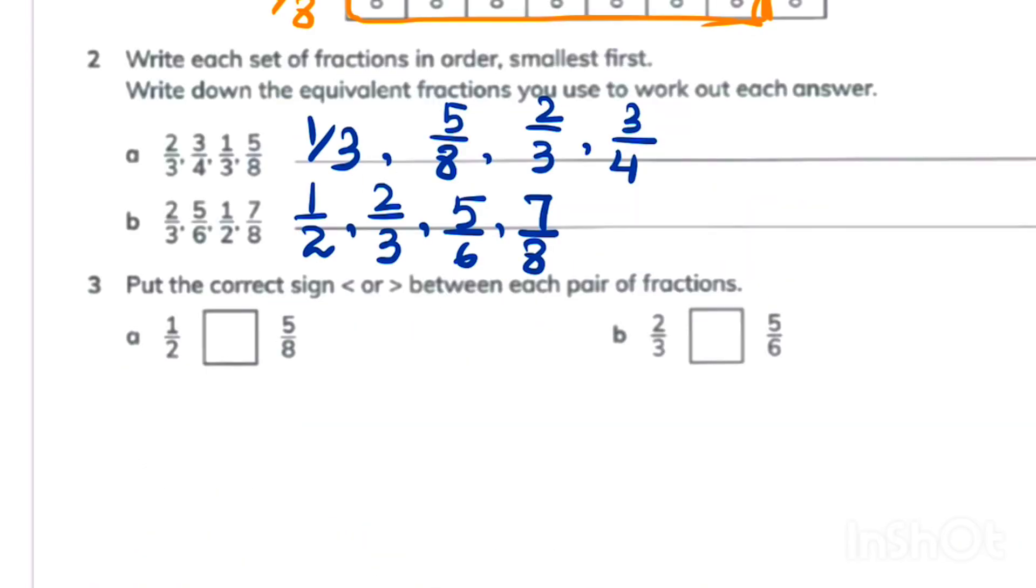In part 3 A, first we need to make the denominators equal to know which fraction is bigger. So we will multiply 1 upon 2 by 4, because we know that 2 times 4 is 8. After multiplying we came to know that 4 upon 8 is smaller than 5 upon 8. So we will put less than sign in between 1 upon 2 and 5 upon 8.